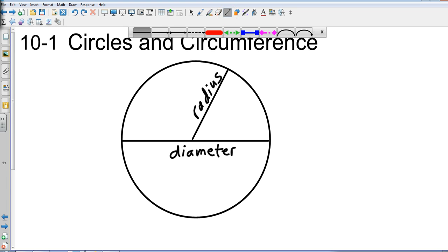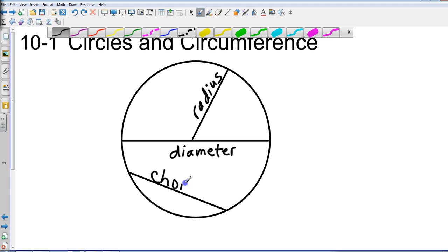And then maybe something a little bit new to us. If I go from the outside to the other outside, from edge to edge, this is called a chord (C-H-O-R-D).